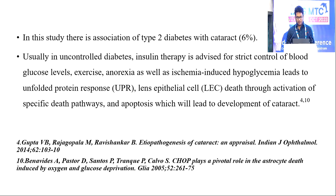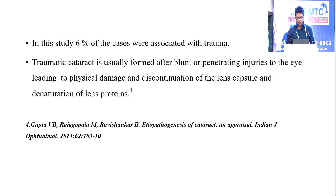In uncontrolled diabetes, insulin therapy is advised for strict control of blood glucose levels. Anorexia as well as ischemia-induced hypoglycemia leads to unfolded protein response, lens epithelial cell death through activation of specific death pathways and apoptosis, which leads to development of cataract. 6% of cases were associated with trauma. Traumatic cataract is usually formed after blunt or penetrating injuries to the eye, leading to physical damage, discontinuation of lens capsule, and denaturation of lens proteins.